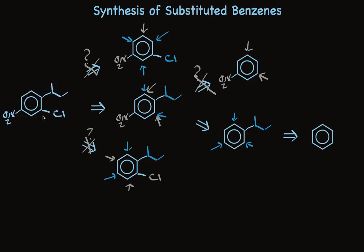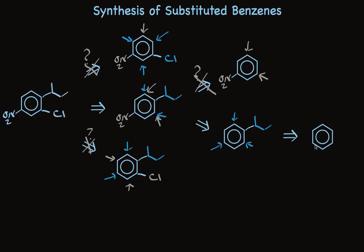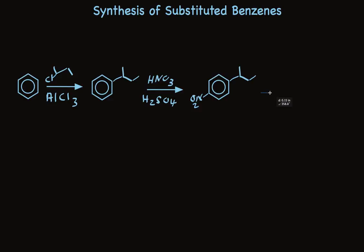Our tri-substituted benzene comes from this di-substituted benzene, which comes from this mono-substituted benzene, which comes from benzene itself. Now we need to write the synthesis from beginning to end and include the reagents and important conditions. We'll use secondary butyl chloride together with aluminum chloride to put the alkyl group on. Then use nitric acid with sulfuric acid to nitrate at the para position. And we'll finish with chlorination. With our retrosynthetic planning approach, we can design syntheses that put multiple groups on an aromatic ring, taking advantage of our knowledge of the ortho-para and meta-directing preferences of the substituents already on the ring.